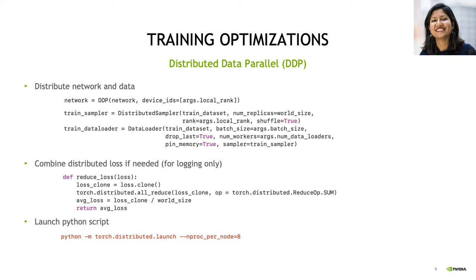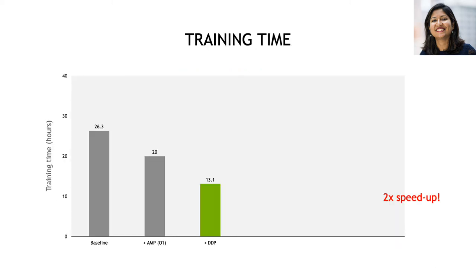Two additional things to note with DDP: if you want to print out your losses for logging, visualization, or TensorBoard, you need to use a special command to reduce all loss values across the different GPUs. Also, you need to use a special launch command for your Python code in which you specify the Distributed Data Parallel paradigm and the number of processes to launch. In terms of training time, we went from 26.3 hours at baseline, down to 20 hours with AMP, and further down to 13.1 hours by replacing Data Parallel with Distributed Data Parallel — a 2x reduction in training time.